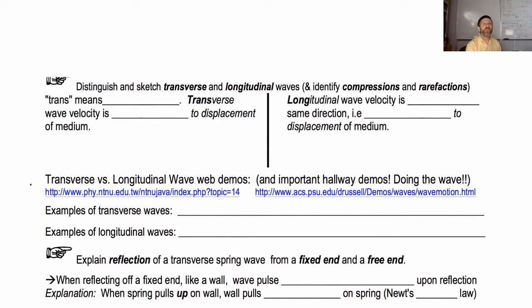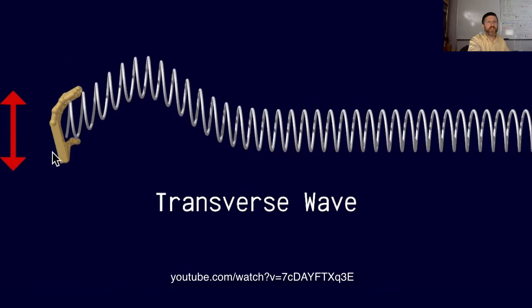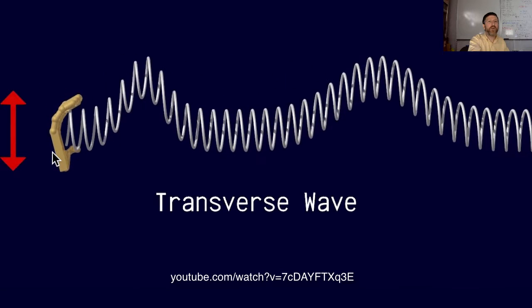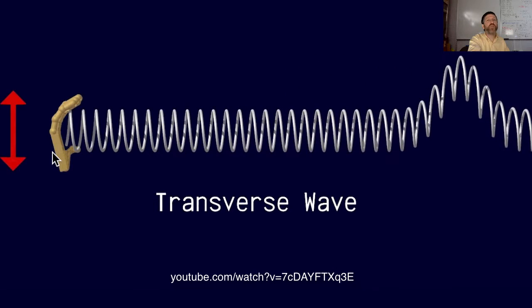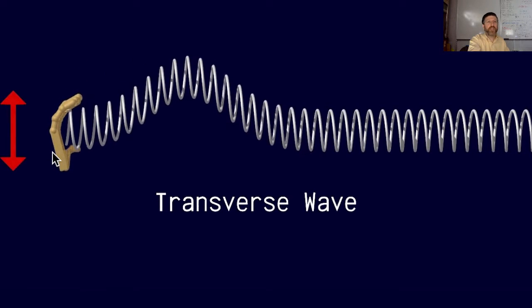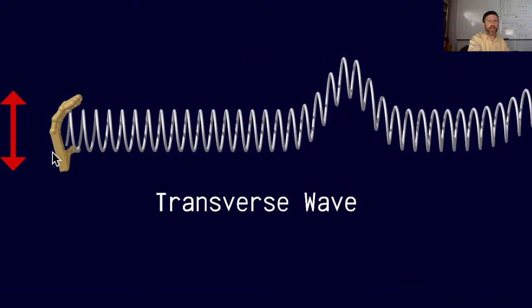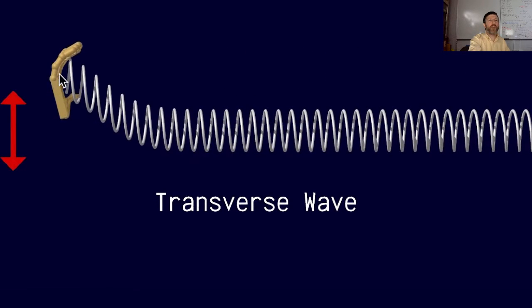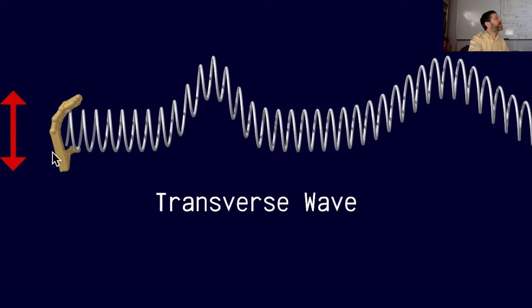The next objective is to distinguish and sketch transverse and longitudinal waves. For a transverse wave, you displace the spring or medium up and down, but point in the direction that the wave is actually moving. Which way is the disturbance moving? The displacement is up and down, but the wave velocity is to the right in this demonstration.